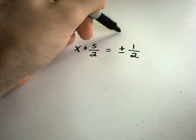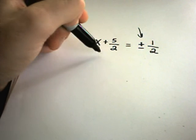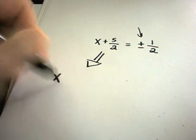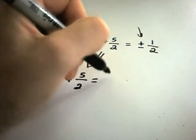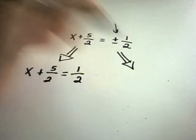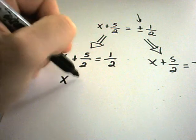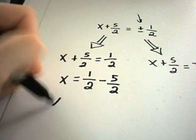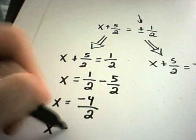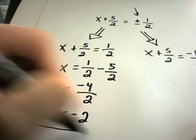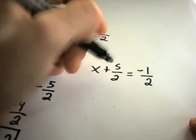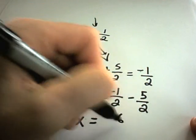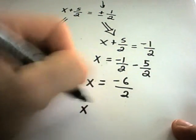Now we can solve for x. The plus or minus indicates two solutions, so we split into two equations. First: x plus 5 halves equals positive 1 half. Subtracting 5 halves gives 1 minus 5 over 2, which is negative 4 over 2, so x equals negative 2. Second: x plus 5 halves equals negative 1 half. Subtracting 5 halves gives x equals negative 6 over 2, so x equals negative 3. Both match our factoring solutions.